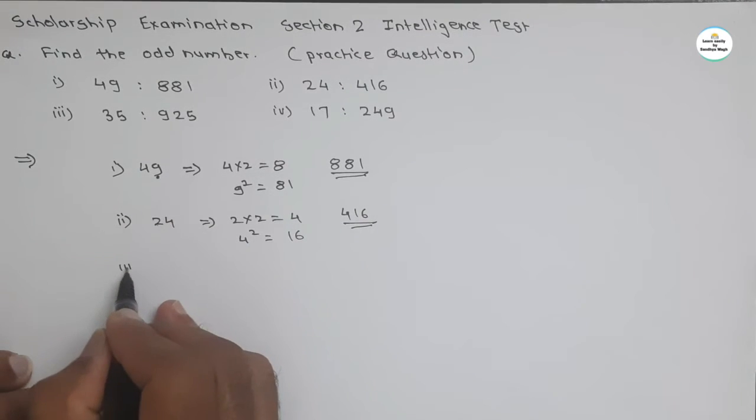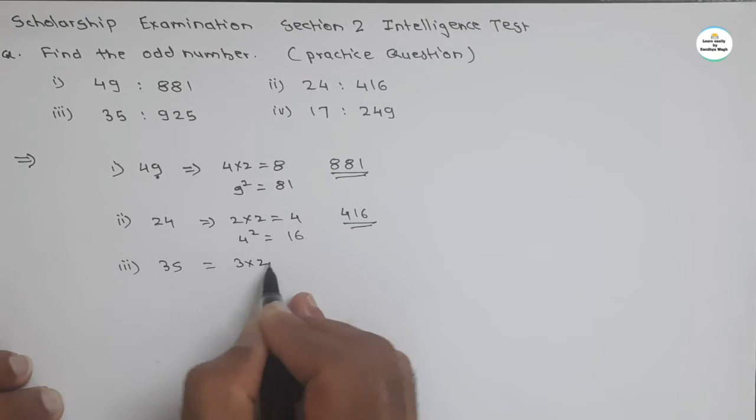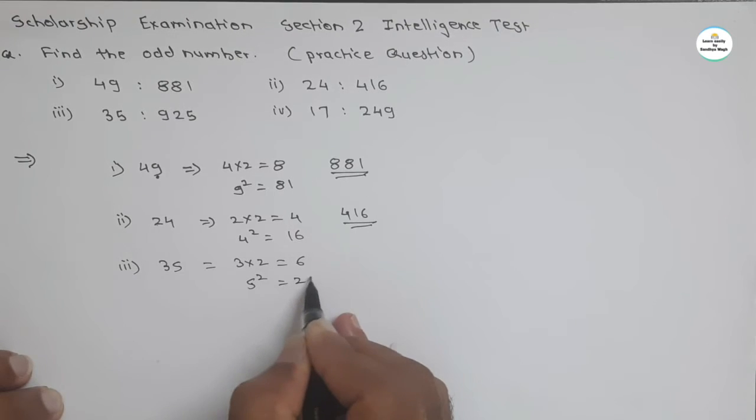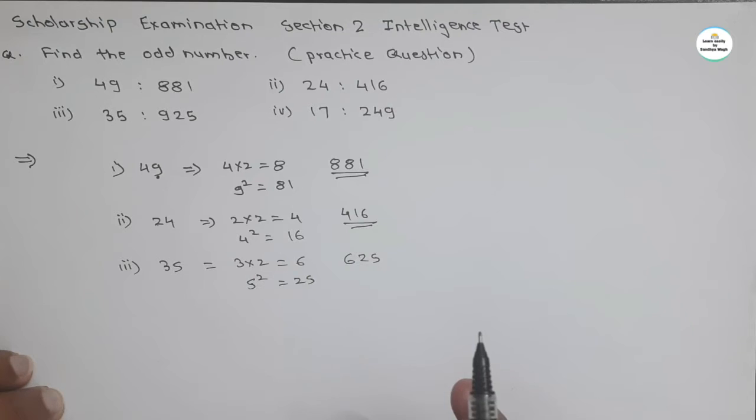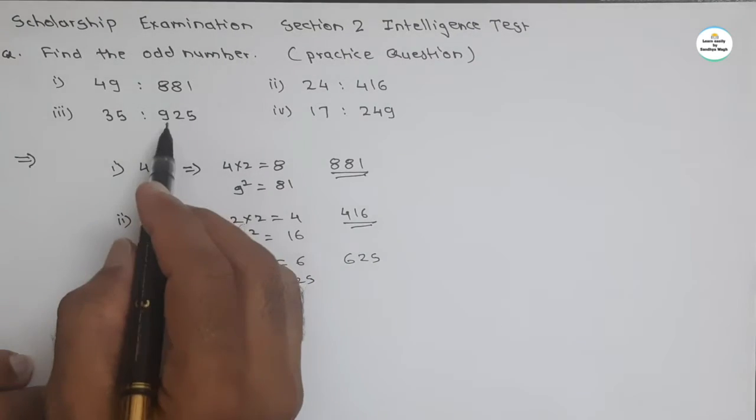For third one 35, multiply first digit with 2, we get 6. And square of last digit, that is 25. We must get 625. Are you getting? But here the number is 925.